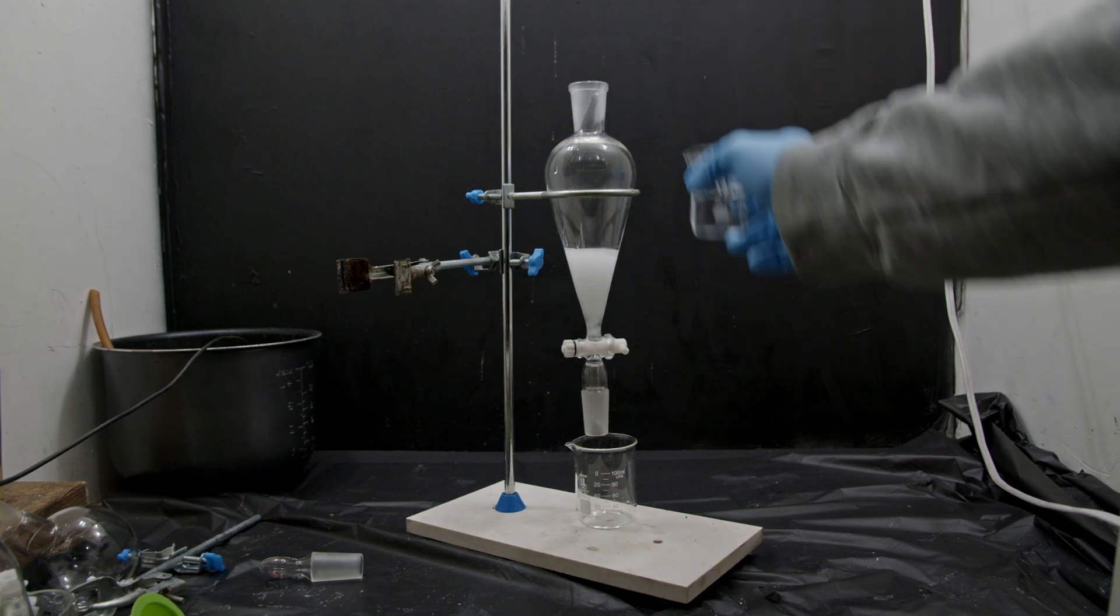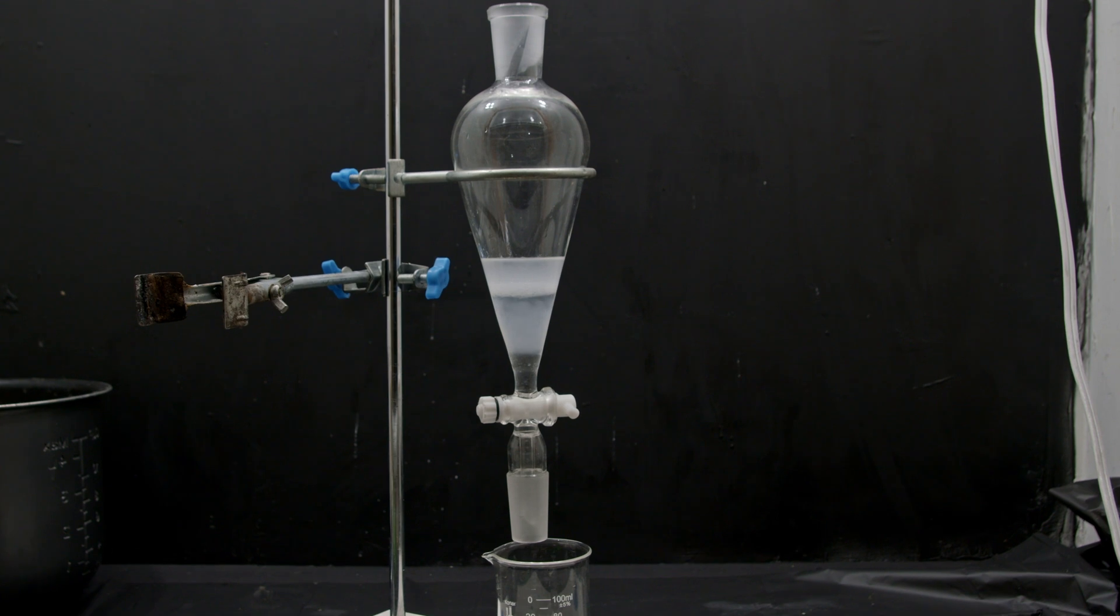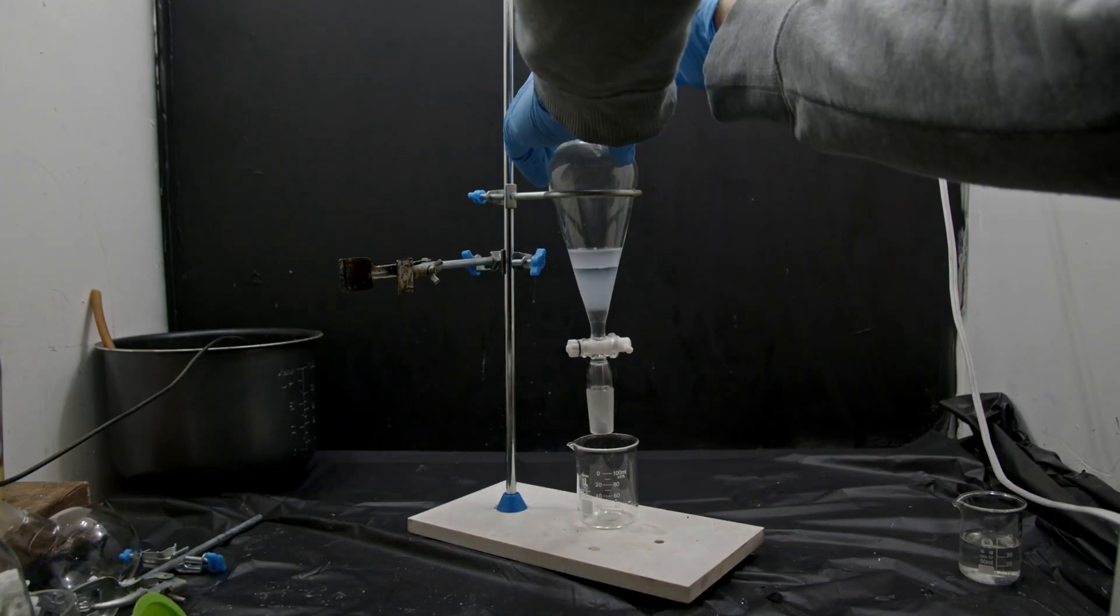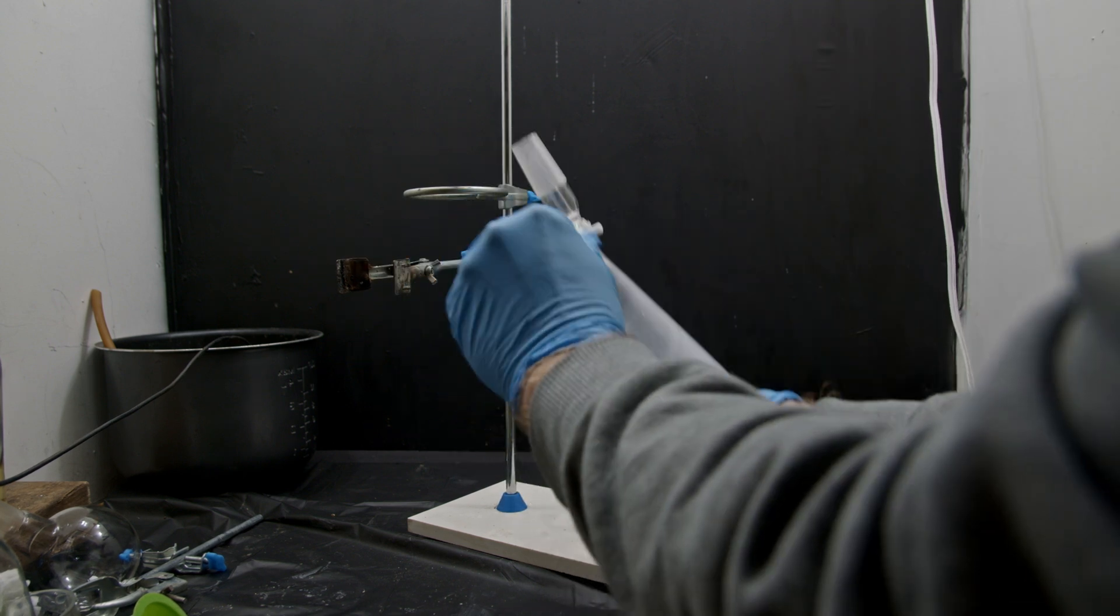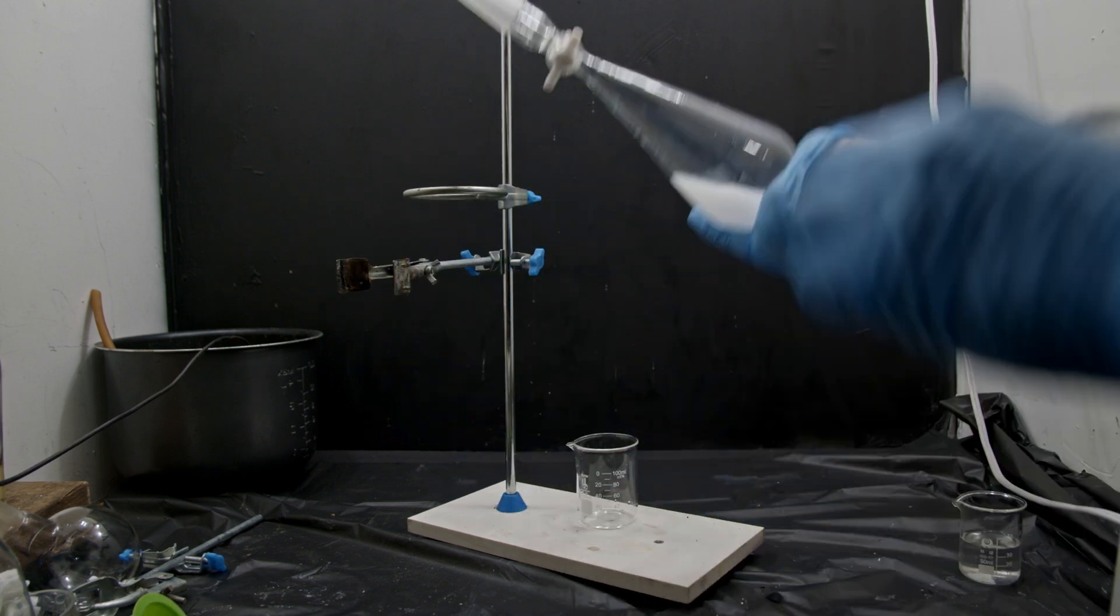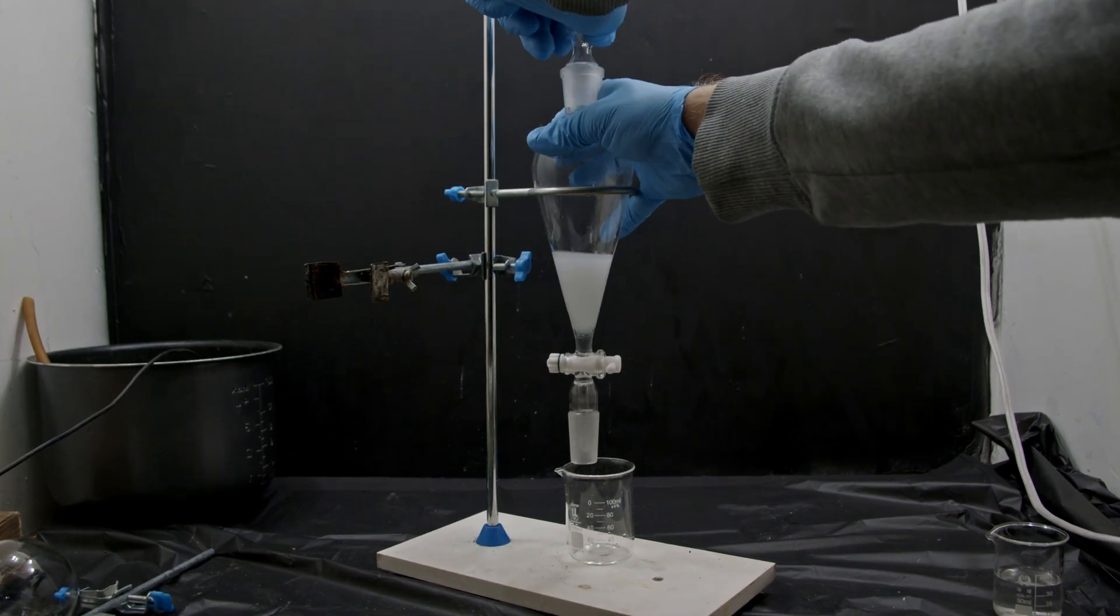We then add this to a separatory funnel with a bit of water, and you'll notice the propyl ethanoate slowly starts to float to the top, and the bottom water layer starts to collect a bit of fogginess to it. So I'll give it a shake so that it all mixes thoroughly. And you'll notice it starts to separate again.